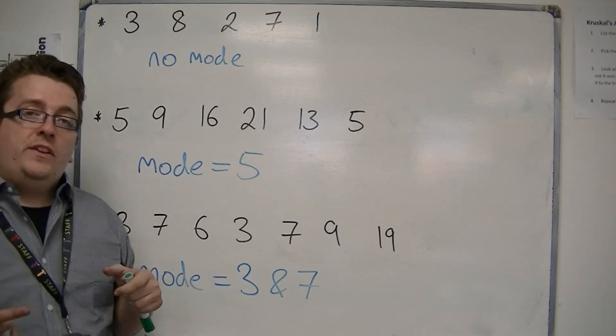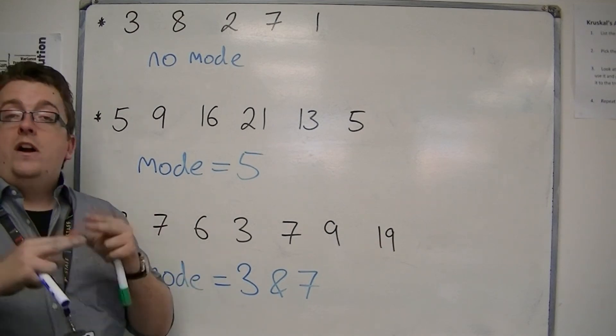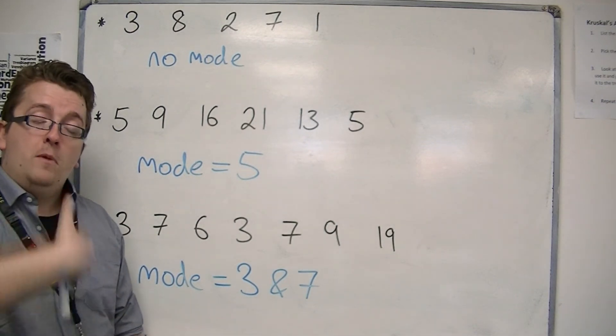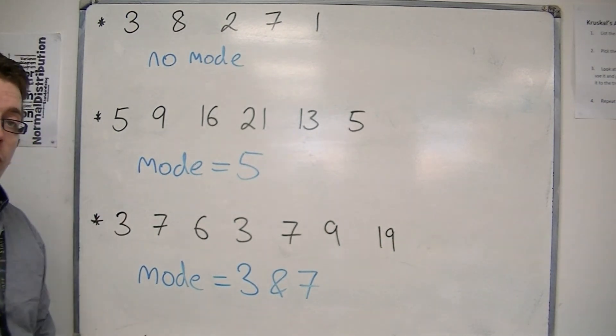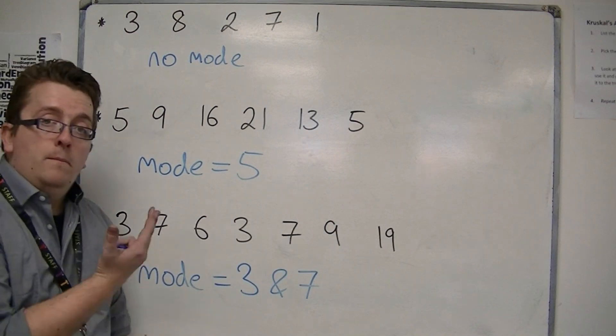However, if you are given a set of data and you are asked a question such as why would the mode not be an appropriate measure or an appropriate average to use, then it is likely to be the case where there is either no mode or that there are more than one mode.